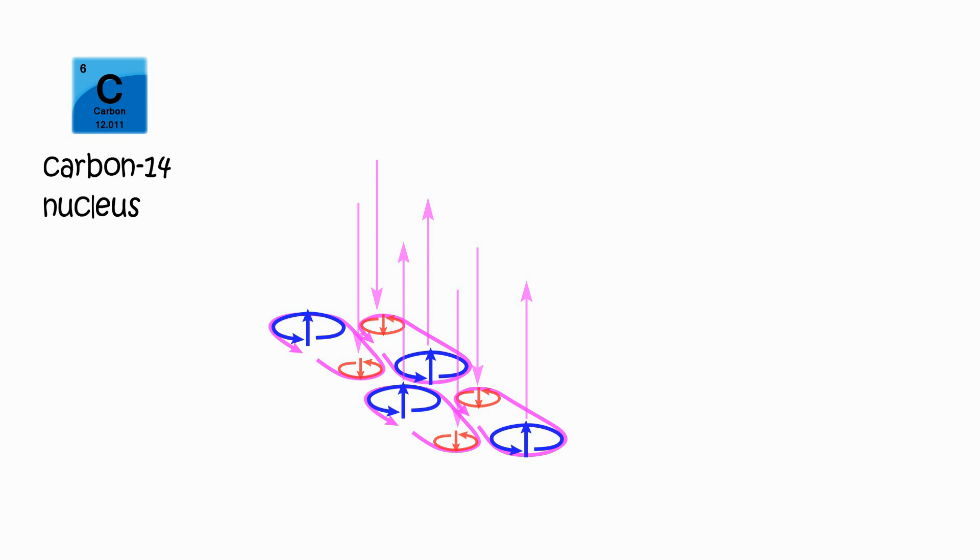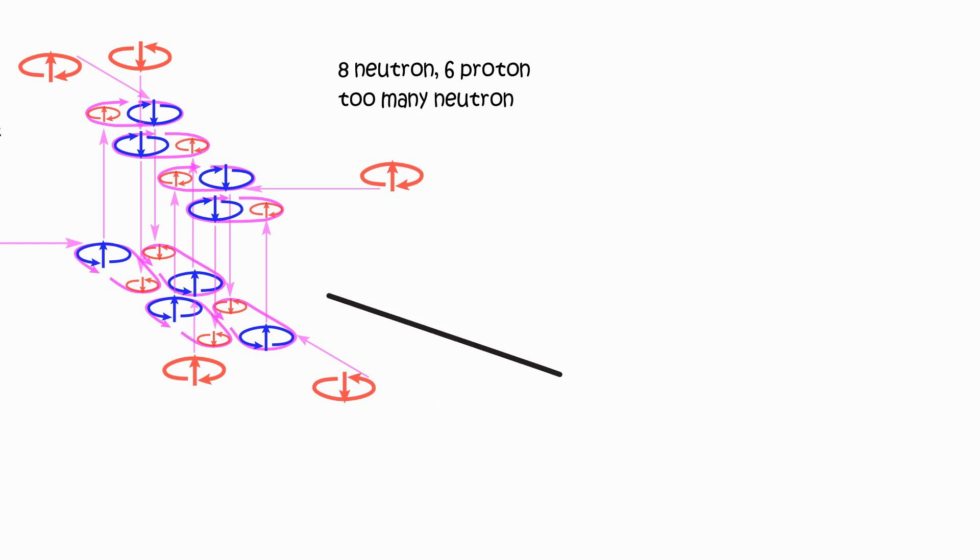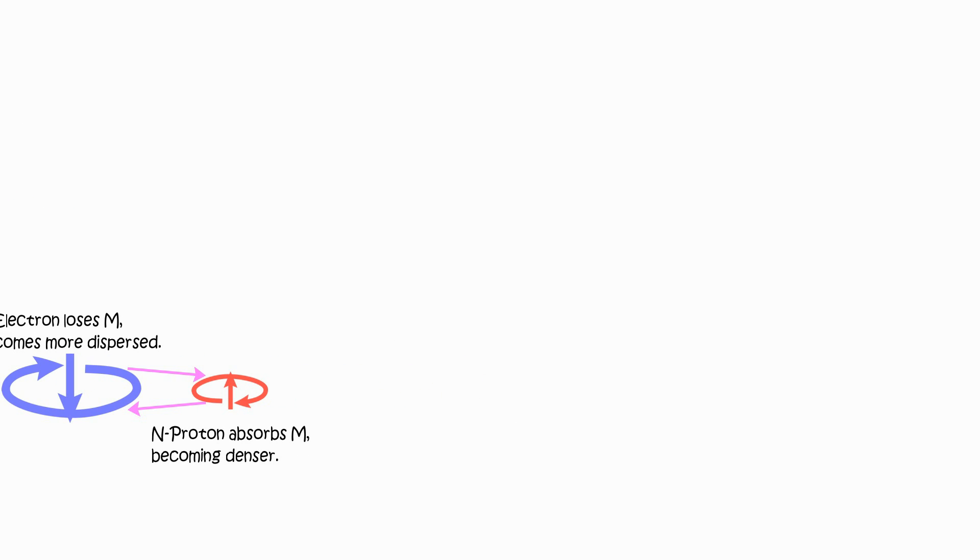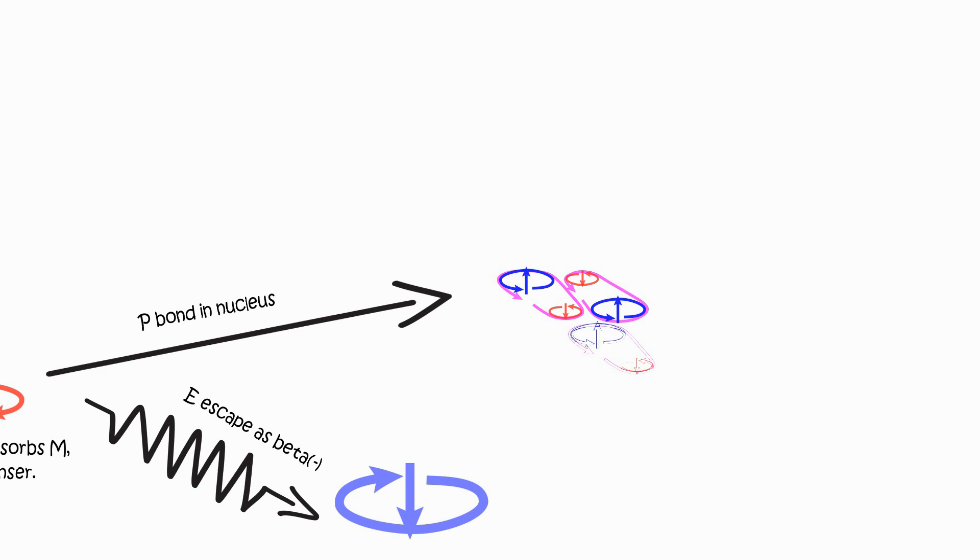Excess neutron. Neutron in carbon-14 is quite stable. However, sometimes its fluctuations are strong enough that N proton exhausts enough momentum from the belt to expel N electron. N proton becomes proton, N electron becomes electron. The nucleus becomes nitrogen-14, which is even more stable.